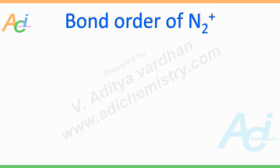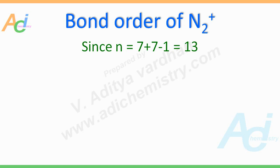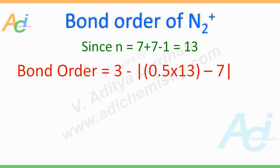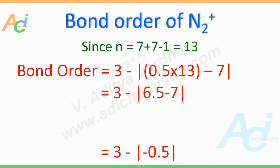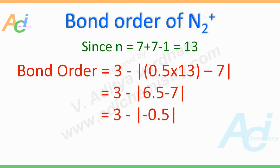Finally, the bond order of N₂⁺. There is one electron less compared to the dinitrogen molecule, so it is 7 plus 7 minus 1, which equals 13. This is the total number of electrons in N₂⁺. The bond order is equal to 3 minus modulus of 0.5 into 13 minus 7. That gives 6.5 minus 7 within the modulus, which is modulus of minus 0.5, equal to 0.5. So 3 minus 0.5 comes to 2.5. This is the bond order of N₂⁺.